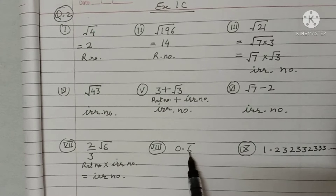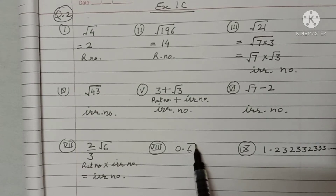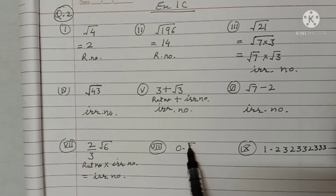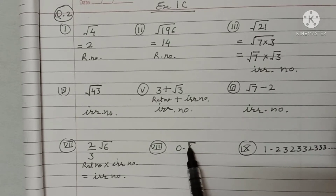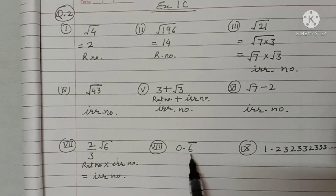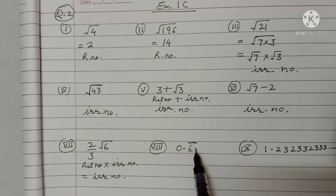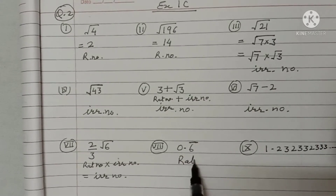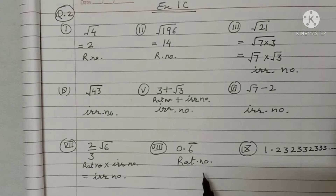The digit 6 has a bar over it, so 0.6̄ means it is in the form of a terminating and repeating decimal. So this is a rational number.